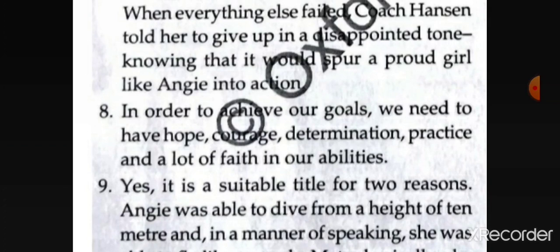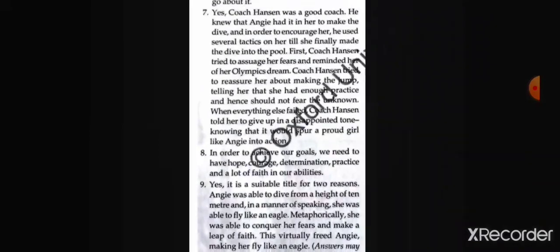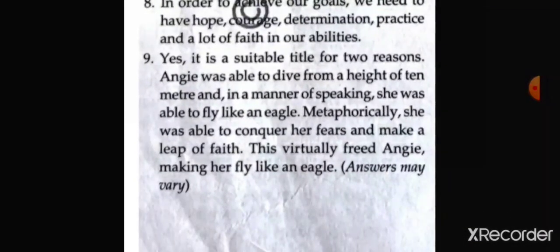Question number 8: we often find ourselves in a situation similar to Angie's. What values and qualities do we need to inculcate in order to achieve our goals? In order to achieve our goals, we need to have hope, courage, determination, practice, and a lot of faith in our abilities. Question number 9: the story is called 'Fly Like an Eagle.' Do you think this is a suitable title? Yes, it is a suitable title for two reasons. Angie was able to dive from a height of 10 meters and, in a manner of speaking, she was able to fly like an eagle. Metaphorically, she was able to conquer her fears and make a leap of faith, which virtually freed Angie, making her fly like an eagle.